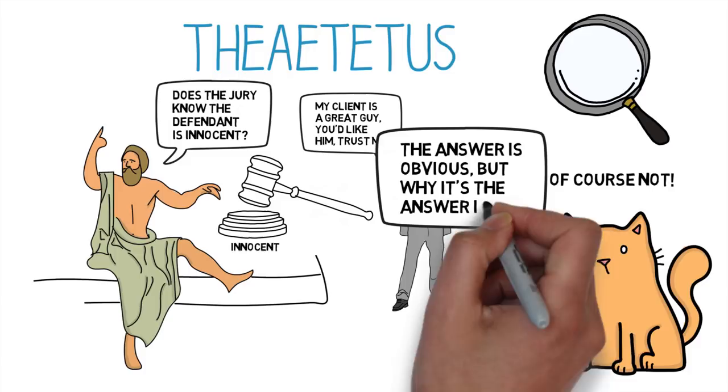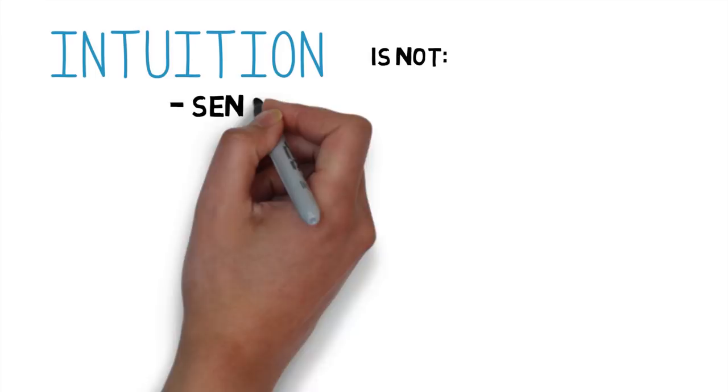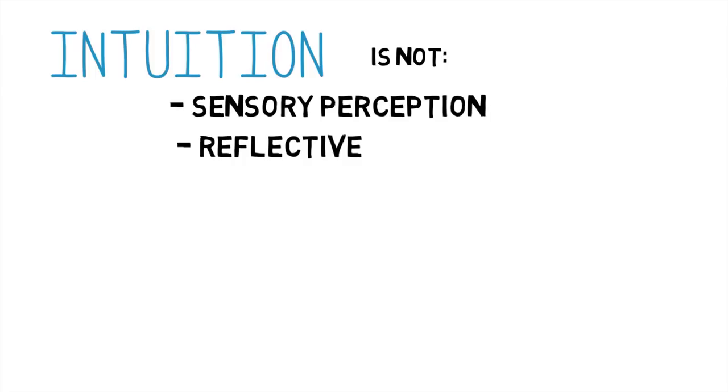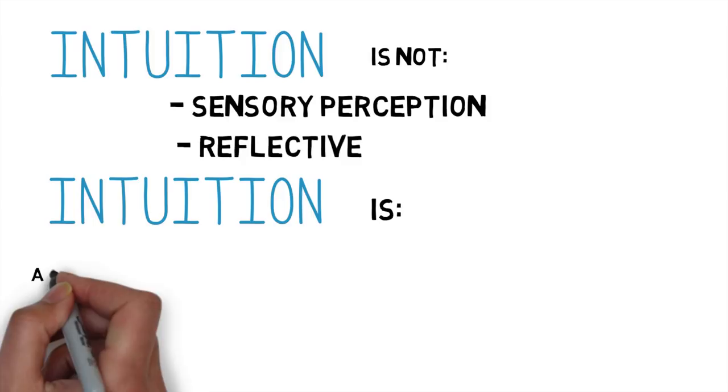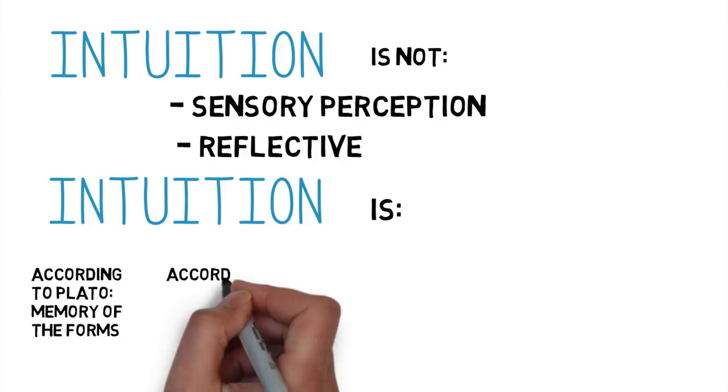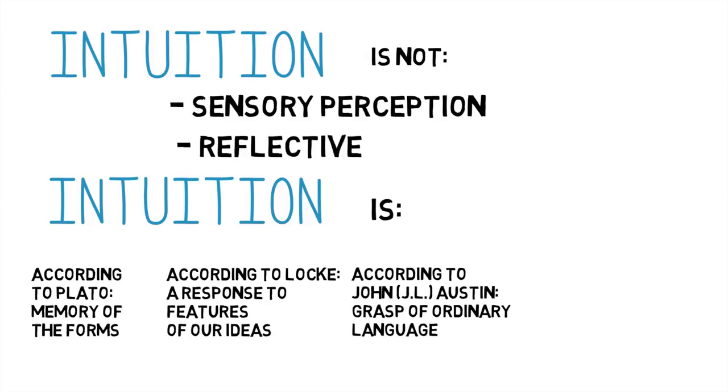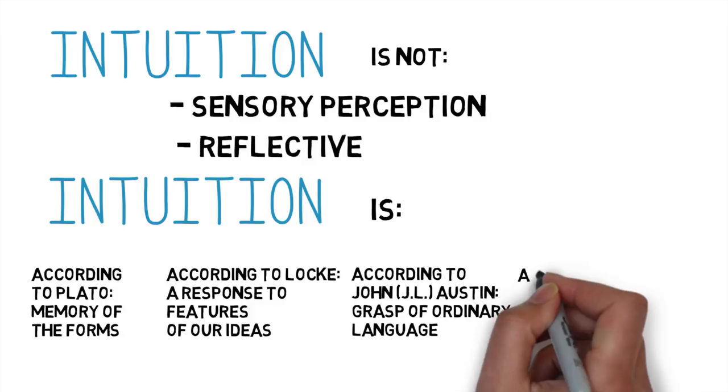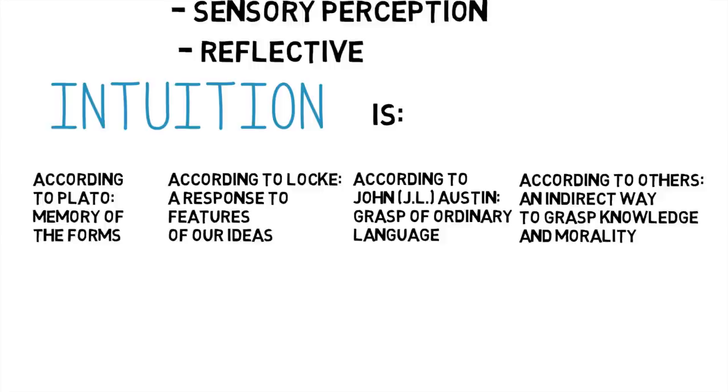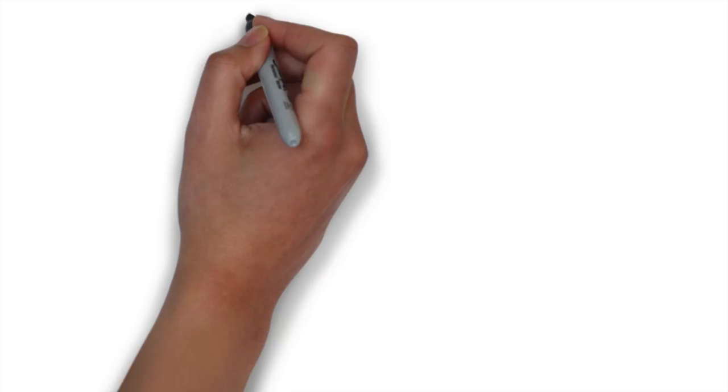Notice that this video has so far defined intuition negatively. It isn't sensory perception, and it doesn't require conscious steps of reasoning. Philosophers have many different positive theories of how intuition works. Plato thought we were guided by our memory of the forms. Locke thought we were responding to features of our ideas. Some 20th century philosophers like John Austin argue that we're guided by our grasp of ordinary language, inheriting a history of learned distinctions that have passed the test of time. Still other philosophers take us to have a more direct grip on the nature of targets like knowledge and morality.